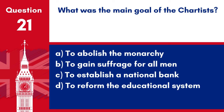Question 21. What was the main goal of the Chartists? A. To abolish the monarchy. B. To gain suffrage for all men. C. To establish a national bank. D. To reform the educational system. Answer: B. To gain suffrage for all men. The main goal of the Chartists was to gain suffrage for all men.